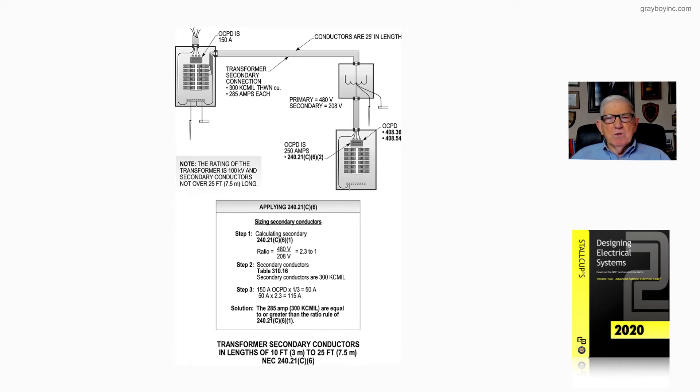Step two, table 310.16, those secondary conductors are 300kCM LTHWN. So step three, we have a 150 amp overcurrent device on the primary side. So it's times one-third, and that's 150 amp overcurrent device times one-third, 50 amp.